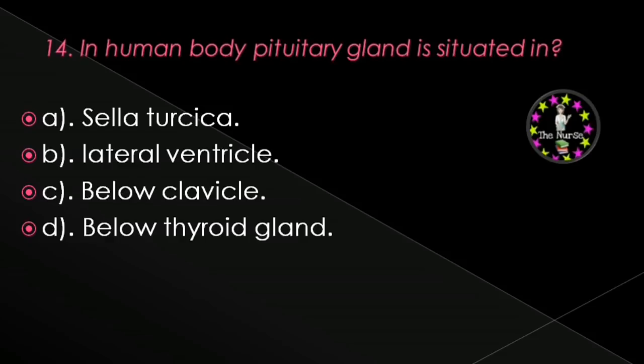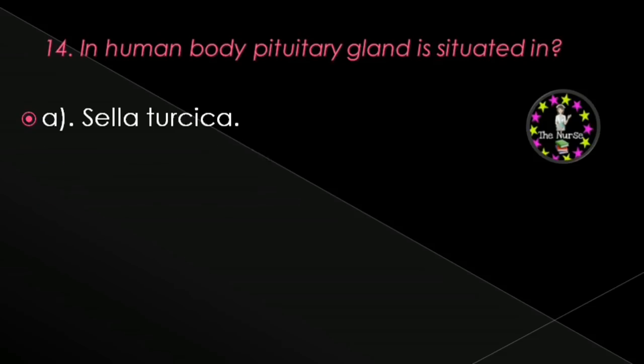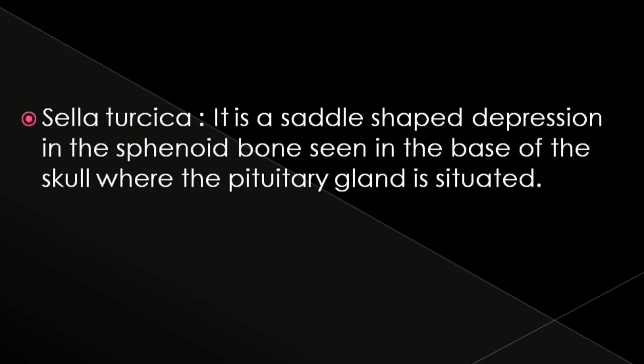Next question: In the human body, pituitary gland is situated in — sella turcica, lateral ventricle, below clavicle, or below thyroid gland? Correct answer is sella turcica. Sella turcica is a saddle-shaped depression in the sphenoid bone seen at the base of the skull, where the pituitary gland is situated.